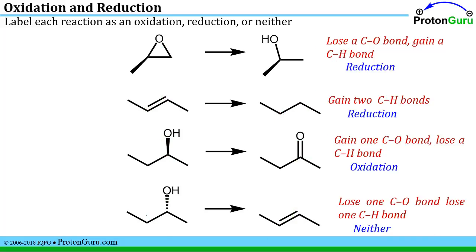Using our definition of oxidation and reduction in organic chemistry: the first reaction is a reduction — losing a carbon-oxygen bond and gaining a carbon-hydrogen bond. The second is also a reduction — gaining hydrogens. The third is an oxidation — increasing bonds to oxygen and losing a hydrogen. In the last case, we lose a carbon-oxygen bond (reduction) but also lose a carbon-hydrogen bond (oxidation), so overall we have neither a reduction nor an oxidation reaction.